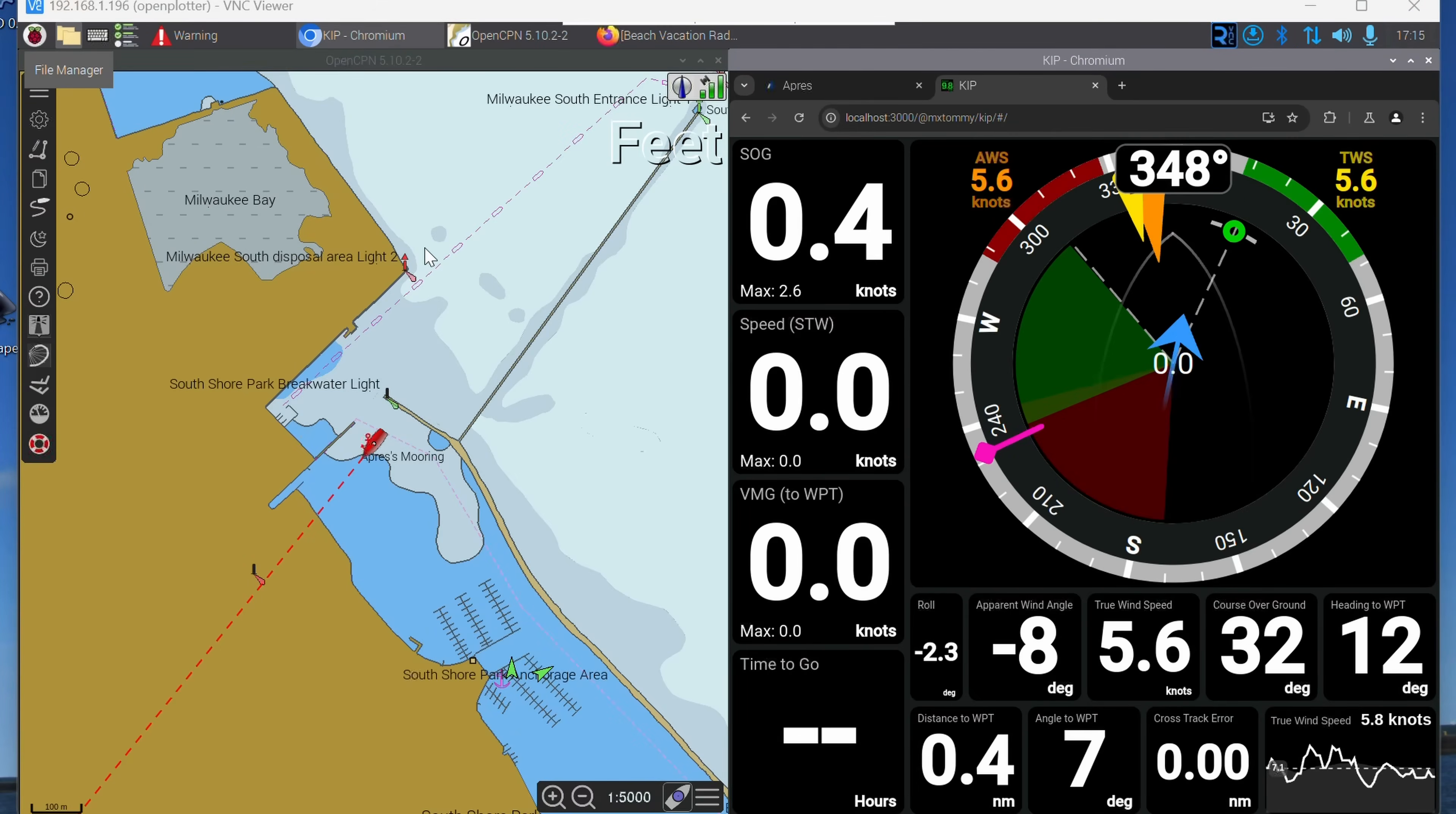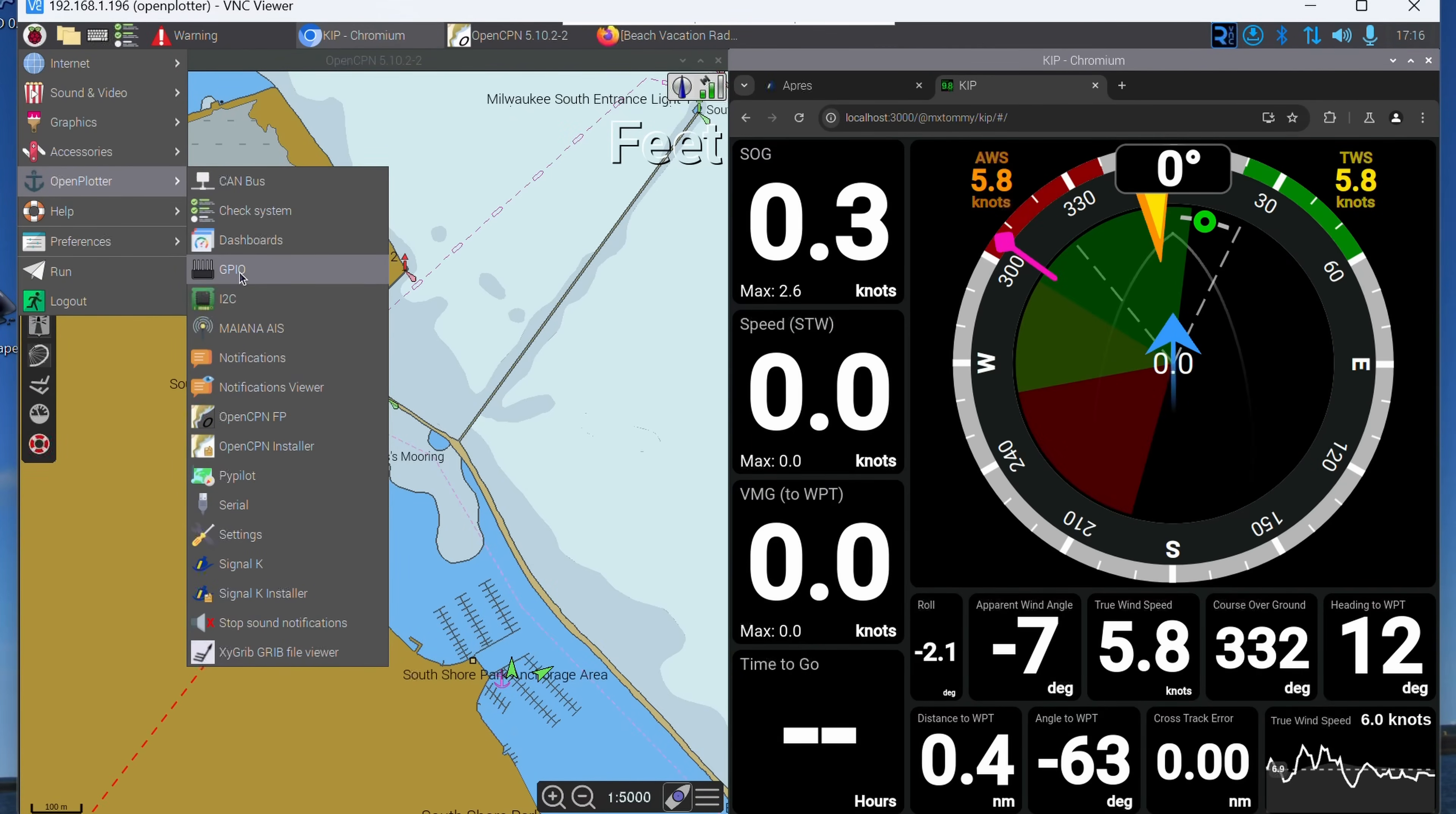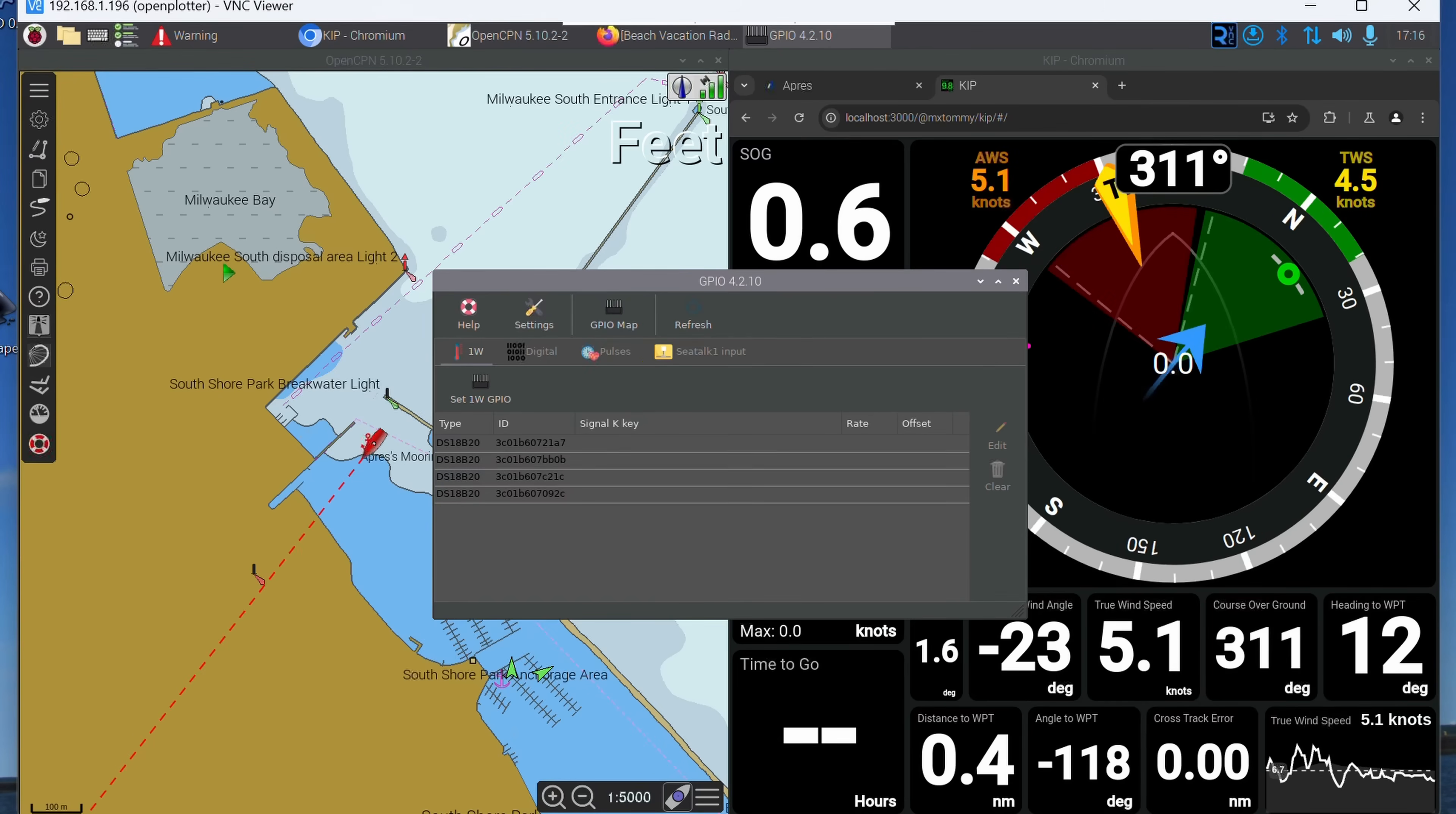It's very simple. In order to add a data connection from SeaTalk 1 to Signal K, we have to first go into here and then open Plotters, and then go down to find the GPIO app. If you don't have the GPIO app installed, do what I did in one of the earlier episodes and go to settings and then add it first.